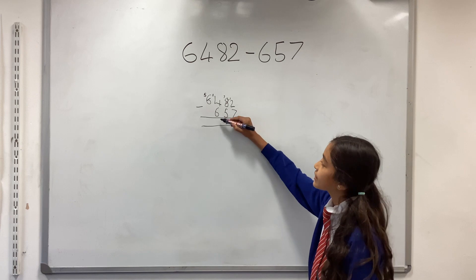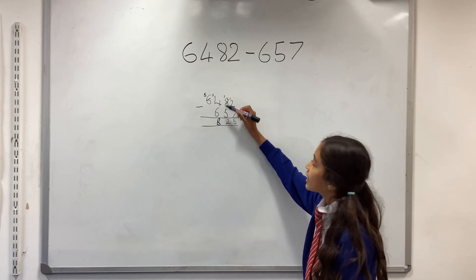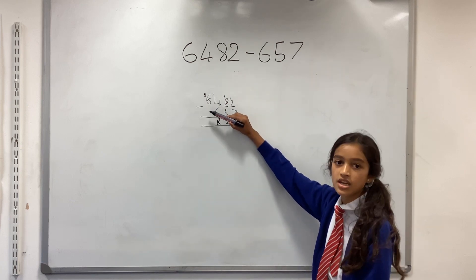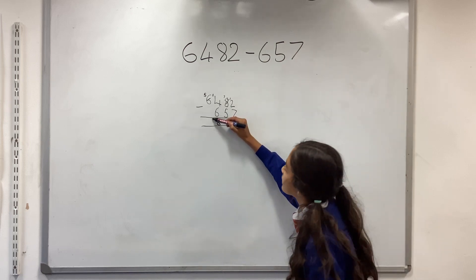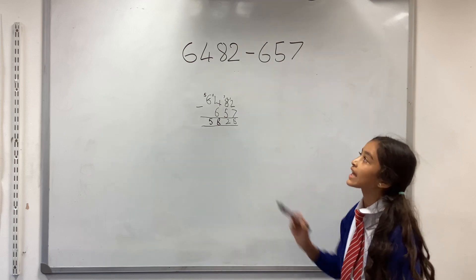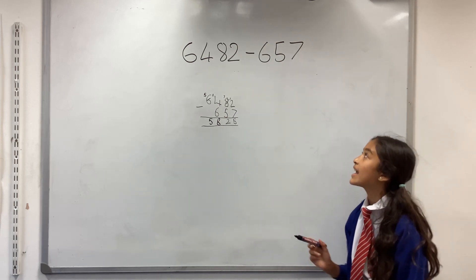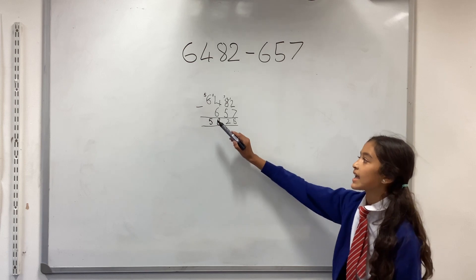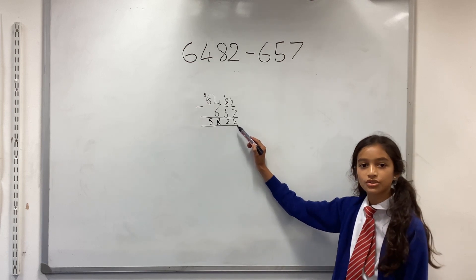And then you do five take away nothing, so that would be five. So the answer to 6482 take away 657 is 5825.